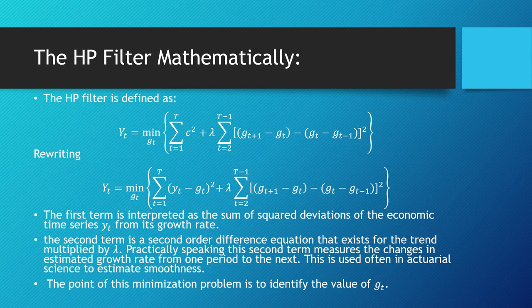The HP filter mathematically is defined as the following, where y_t equals the minimization of this expression with respect to g_t, which is the summation of all cyclical components at time t squared plus lambda times the summation of all second-order difference equations of our growth rate equation, which is a little bit complicated, where t goes from 2 to t minus 1.